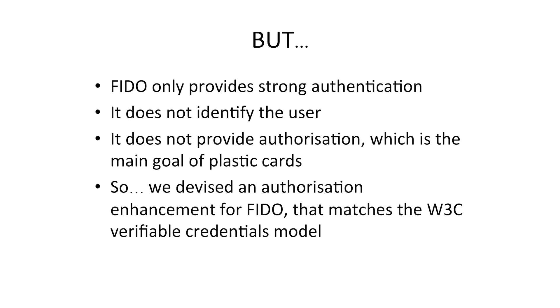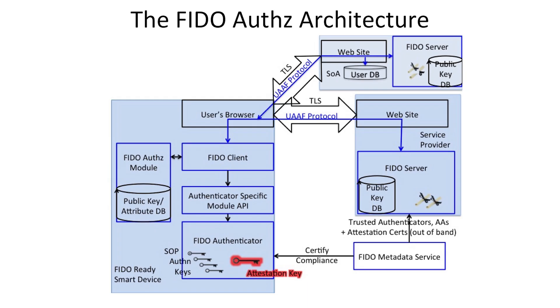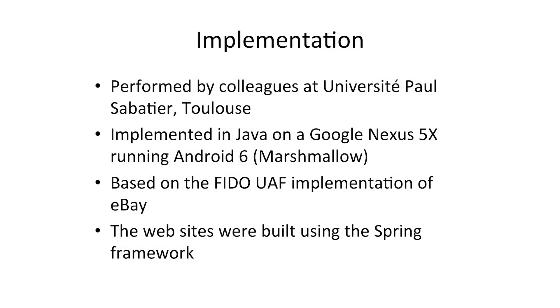The work I've been doing is to add authorization to FIDO, so that using the same system we can authenticate to a website and also send attributes — such as being a student or staff at Kent — to authorize services. This is our authorization model, very similar to the FIDO authentication model but with extra components. On the right-hand side there are now two websites: one that issues the credential stored on your phone, and one that receives it. The validating website checks the signature on the credential to confirm it was signed by the issuing website.